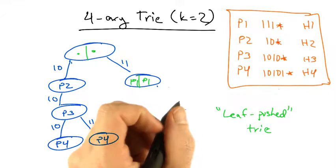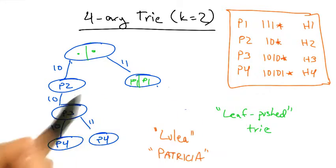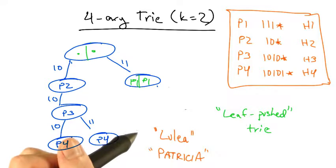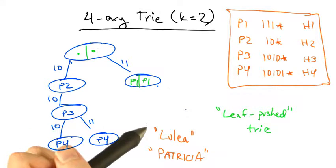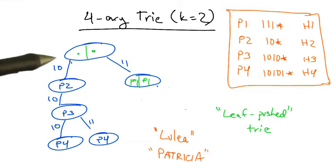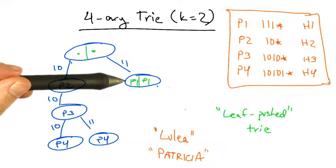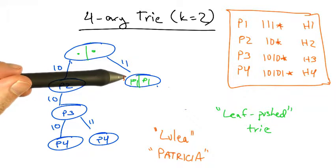There are a variety of other optimization algorithms, including one called Lulea, and another called Patricia. Each of them use the same basic idea that we've explored here, except some of them, like Lulea, are a three-level trie. And often they use a bitmap to compress out repeated entries, such as those that exist here.